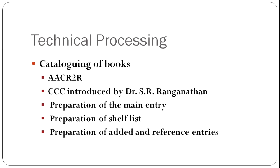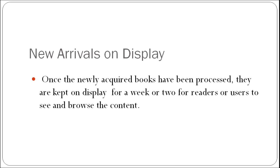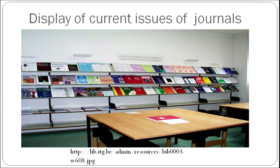After classification, cataloguing of books is also done. The different tools used are AACR2R, and CCC introduced by Dr. S. Ranganathan. Under cataloguing, libraries prepare main entries, shelf lists, and added and reference entries. Once the newly acquired books have been processed, they are kept on display for a week or two for readers or users to see and browse the content. The current issues of journals are also put on display for users to browse.